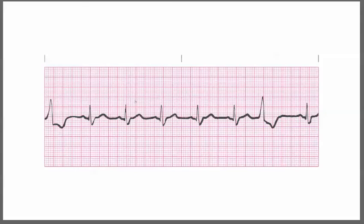This is the last installment in terms of premature contractions and determining how to recognize one from another. You're looking for the difference between a PAC, a PJC, and finally a PVC. We've looked at the premature atrial contractions, we've looked at the premature junctional contractions, and now we're going to recognize the PVC, or the premature ventricular contraction.